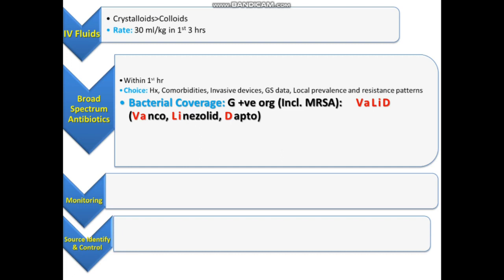Bear in mind that Daptomycin cannot be used for any pulmonary infection — it should be used for non-pulmonary infections, because Daptomycin is deactivated in the lungs. Now we need to see how we cover gram-negative organisms in septic shock.